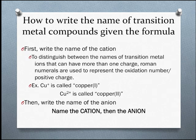So what if you have the formula of an ionic compound with a transition element in it? How do you write the compound's name? Well, first you write the cation's name. In order to distinguish between the names of transition metal ions that can have more than one charge, you must use a capital Roman numeral to represent the amount of positive charge. For example, the copper ion with a positive 1 charge is called copper(I), whereas the copper ion with a positive 2 charge is called copper(II).